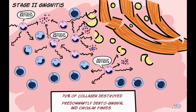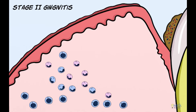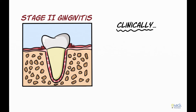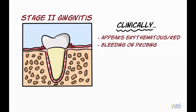The inflammation may also trigger proliferation of the junctional epithelium, which starts to show development of rete ridges. The increased capillary density and vasodilation of capillaries in this stage are responsible for erythema and bleeding on probing that may appear clinically.